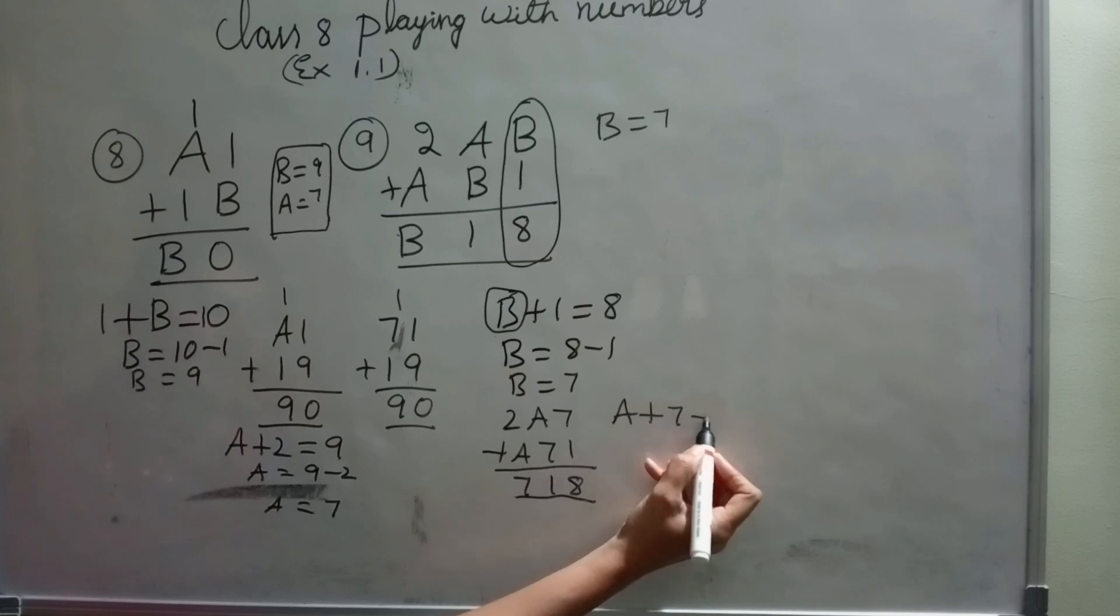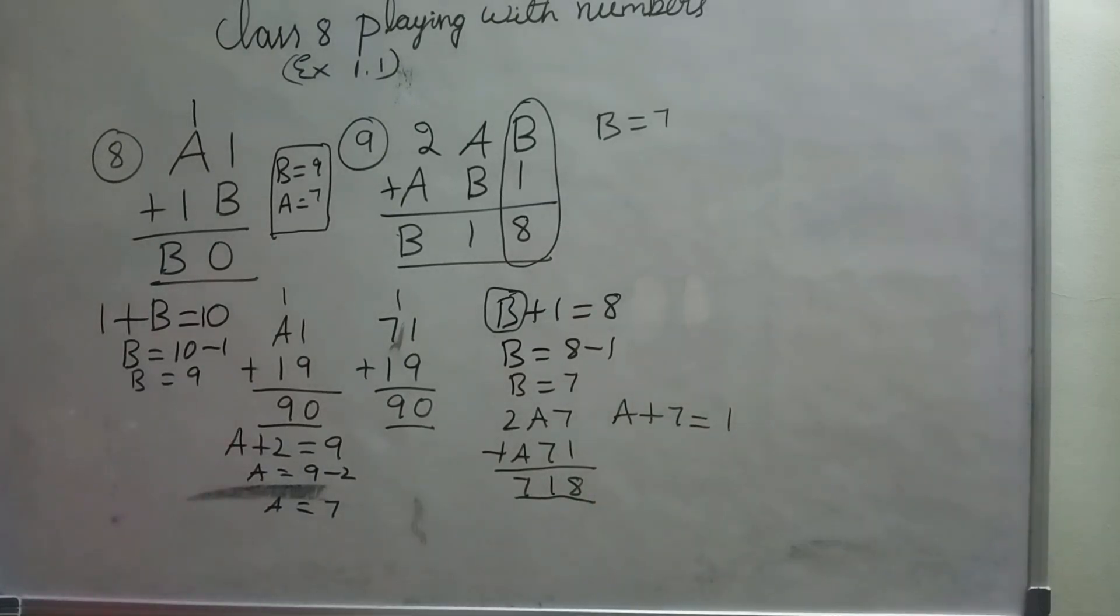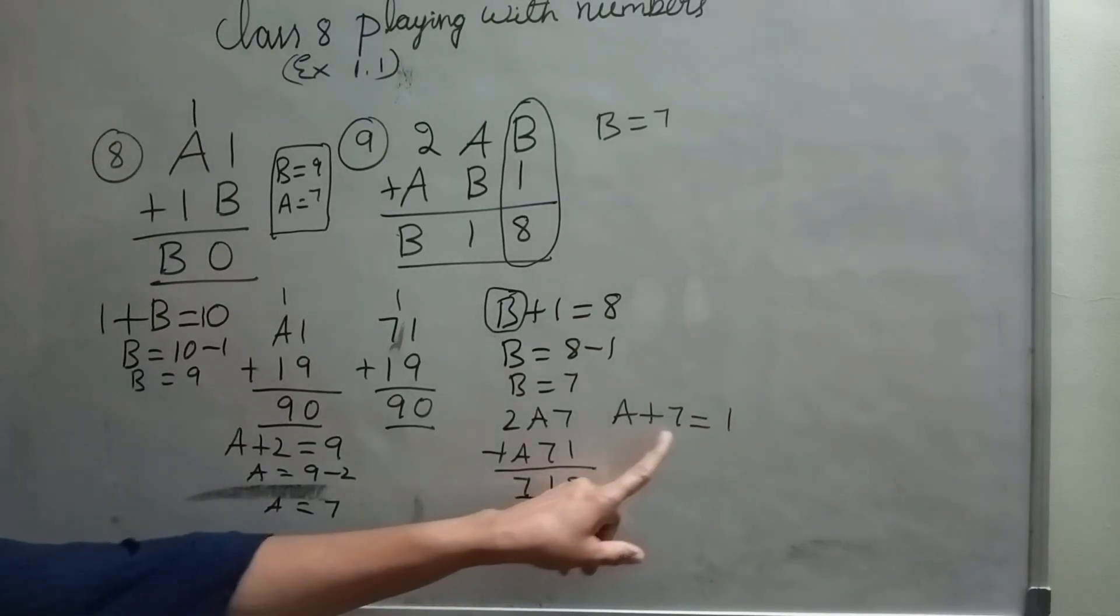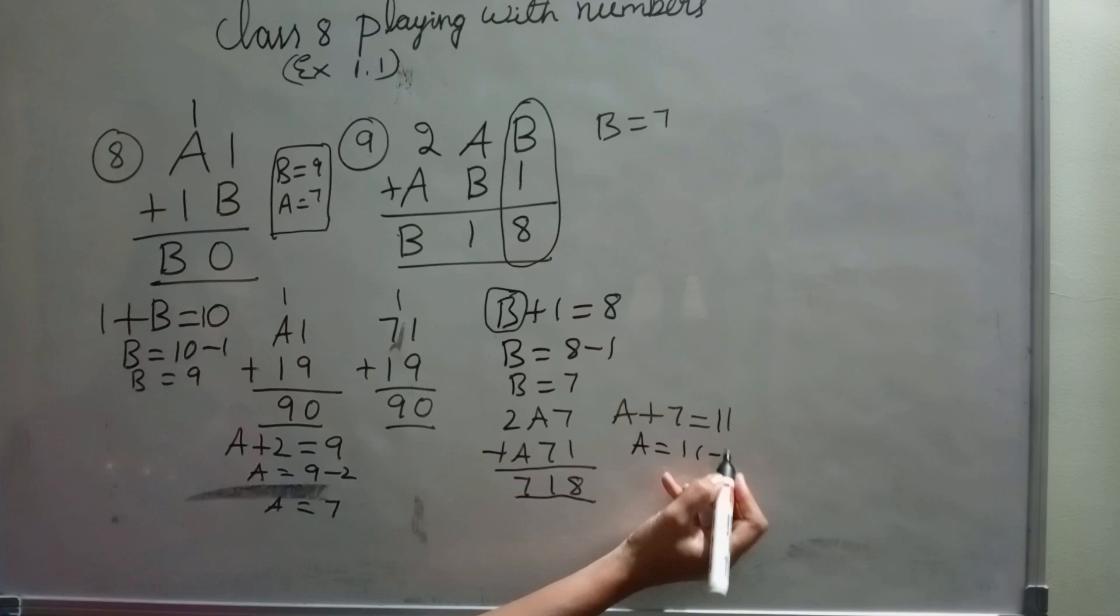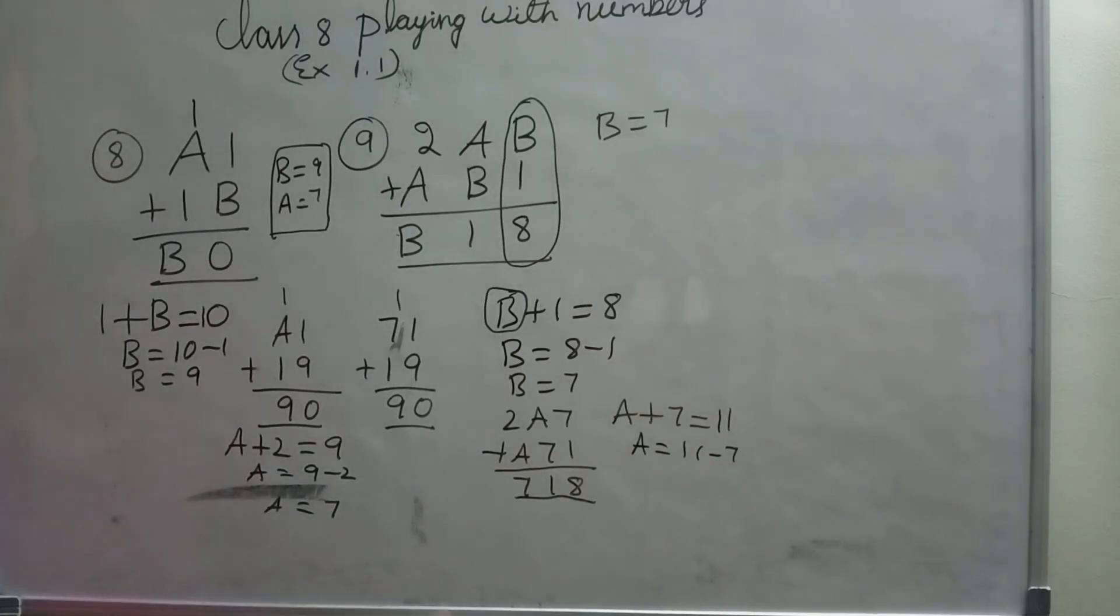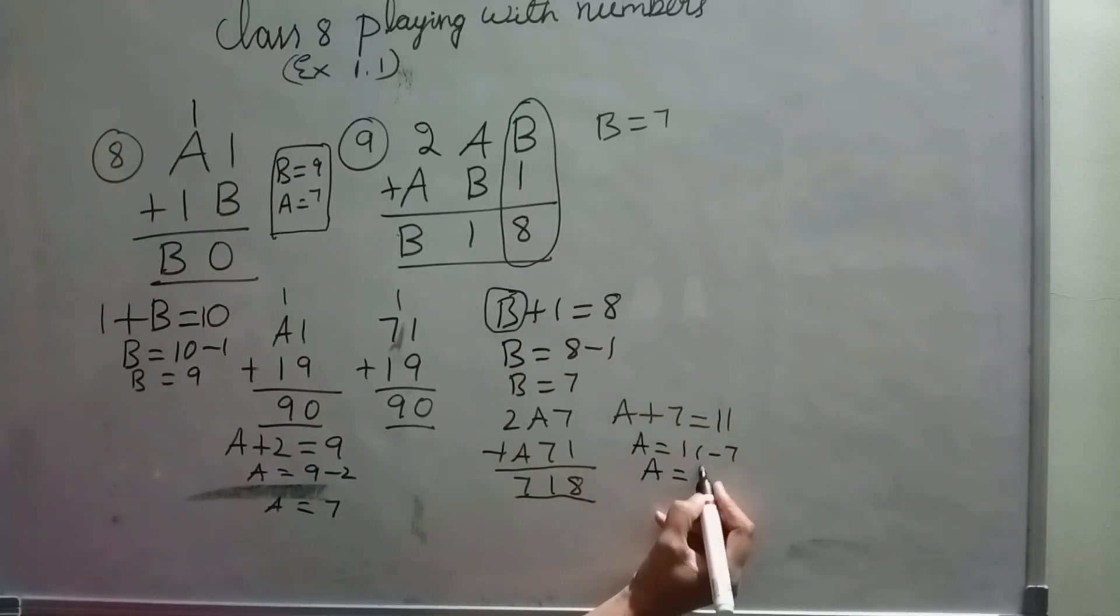A plus 7 equals 1. Here it is not possible. If I add any number to 7, I won't get 1 as answer. So it is 11. A equals 11 minus 7. A equals 4.